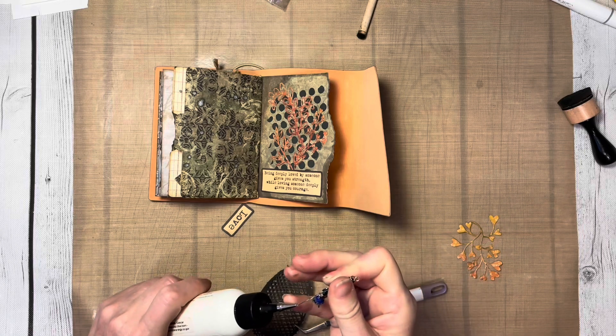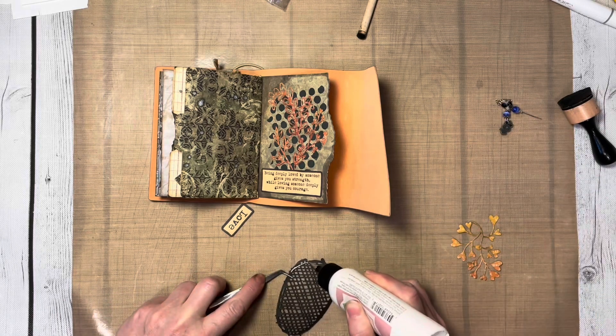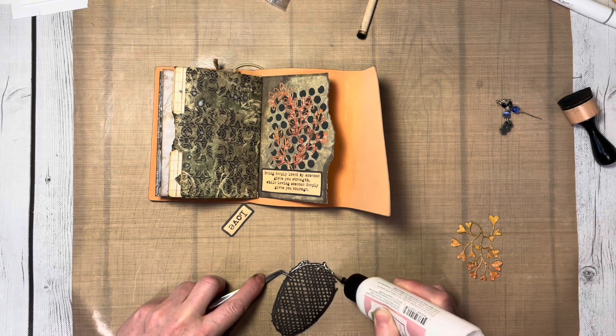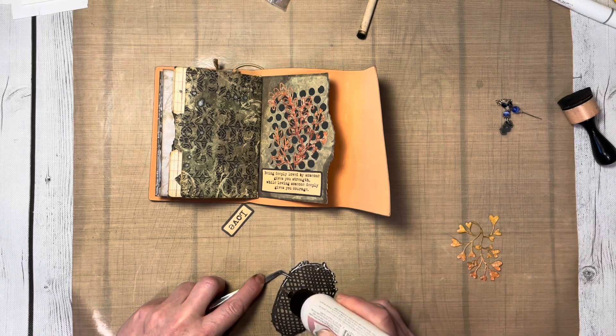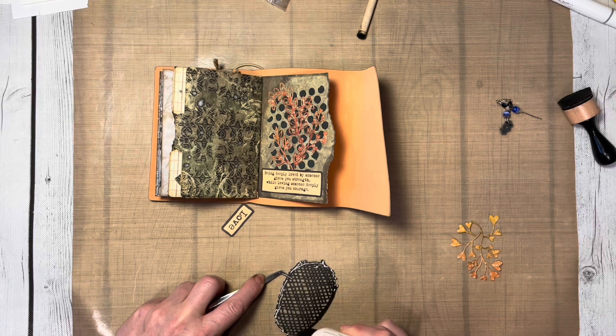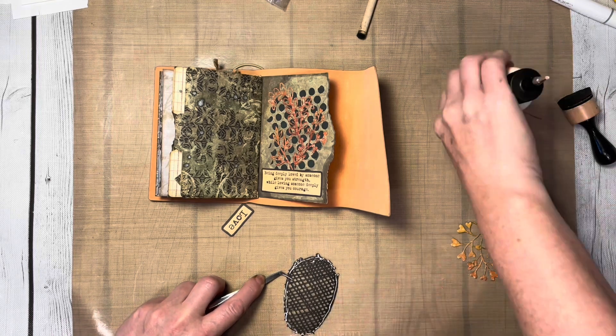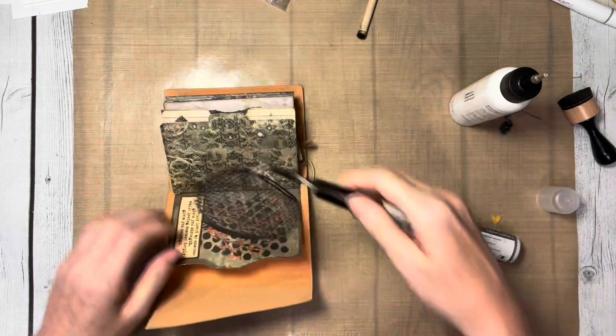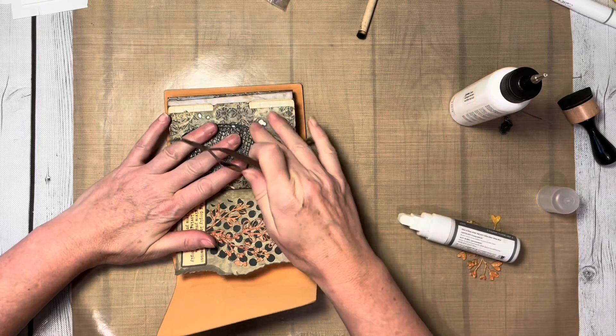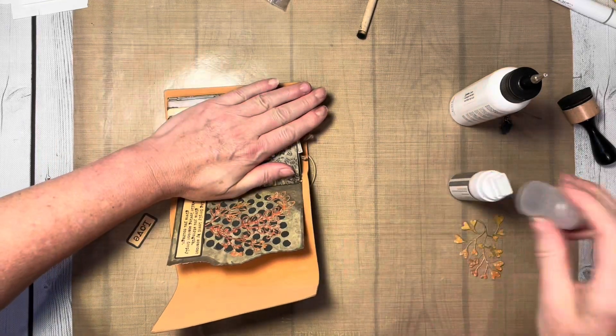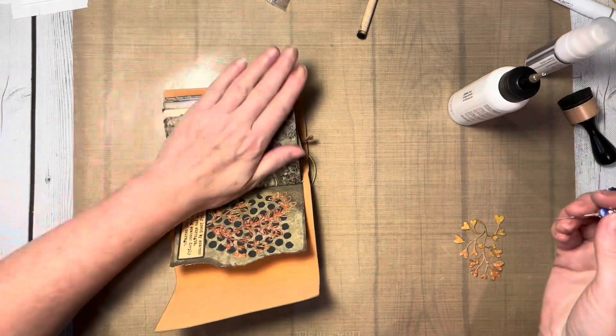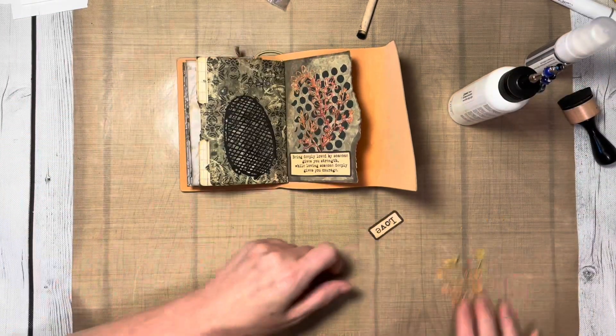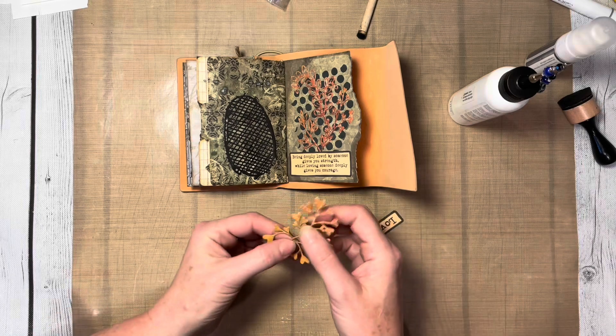Again, I forgot to put adhesive on the back of my paper before I ran it through my die cut machine, but I'm used to that. I'm going to use my liquid adhesive. For this one, I mostly need to adhere it around the outside, but I'll push some of this other adhesive into the middle. It's not ideal because sometimes it can be messy, but it does the trick. I'm just making sure it's stuck down nicely—the liquid adhesive doesn't take very long to grip.